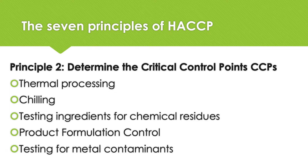Principle two is to determine the critical control points, or CCPs. A critical control point is defined as a step at which control can be applied and is essential to prevent or eliminate a food safety hazard or reduce it to an acceptable level. For each critical control point, you will need to identify the preventive measure. Some examples of CCPs may include thermal processing, chilling, testing ingredients for chemical residues, product formulation control, and testing products for metal contaminants. How will you prevent the hazard? Use of specific temperature, time procedures, etc.